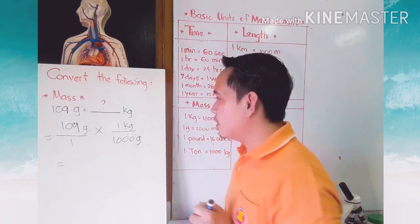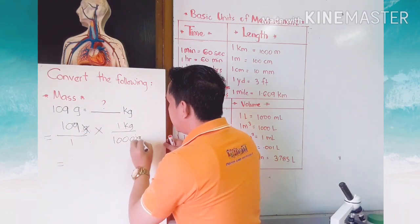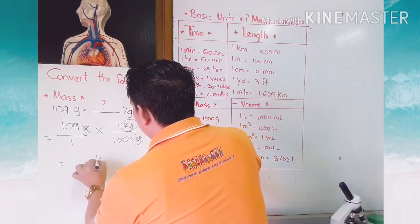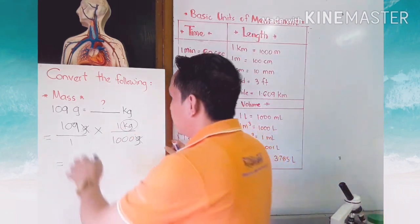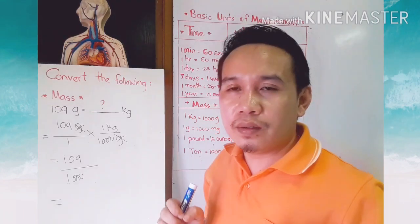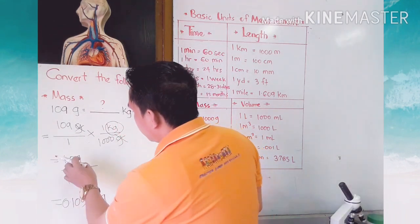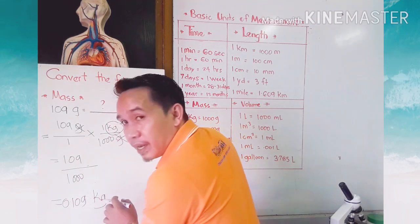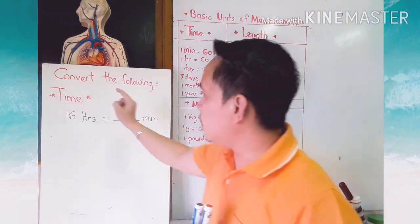Next, cancel out both units — the gram unit at the top and at the bottom — so the remaining unit is kilogram. Now for the final answer: 109 divided by 1,000 is equal to 0.109 kilogram. So 109 grams equals 0.109 kilograms.